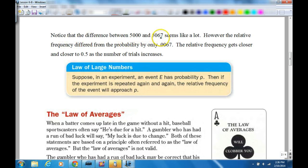Notice that the differences seem like a lot. However, the relative frequency differed from the probabilities only 0.0067, and the relative frequency gets closer and closer to 0.5 as the number of trials increase. This is important. So, the relative frequency gets closer to the expected probability the more trials you have. And that's the law of large numbers. The more times you repeat an experiment, the relative frequency will approach the actual probability.